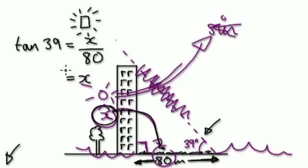So we want to know what x is, so times both sides by 80. So 80 tan 39. So there, x represents the height of our building. So x equals 80 tan 39.